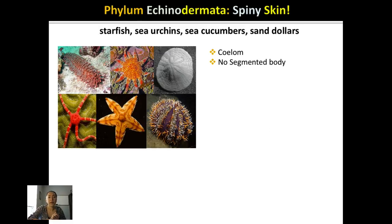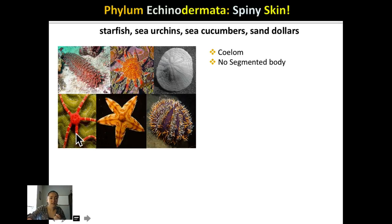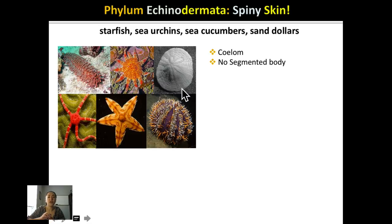Then we have phylum Echinodermata. 'Echino' means spiny, and 'dermata' means skin, so one characteristic of echinoderms is their spiny skin. This includes starfish, brittle stars, sea urchins, sea cucumbers, and sand dollars. Notice the sand dollar looks like a little starfish on its back. What is unique about Echinodermata is spiny skin and a special type of symmetry called five-fold symmetry — for most echinoderms you can split their body in five different planes to create mirror images on both sides.